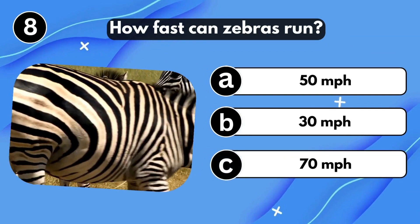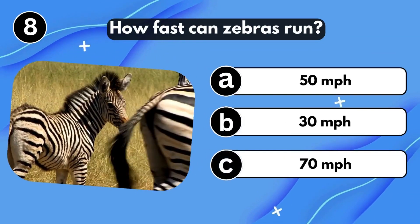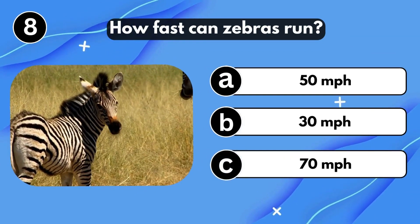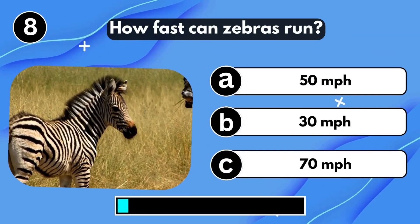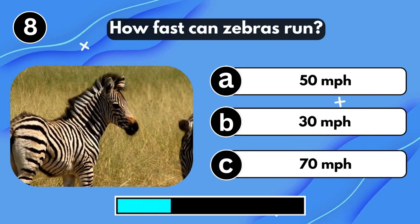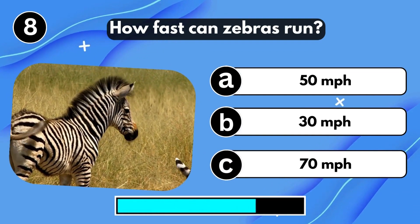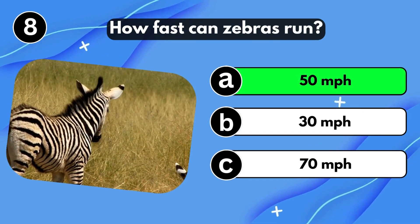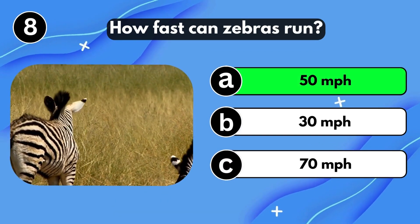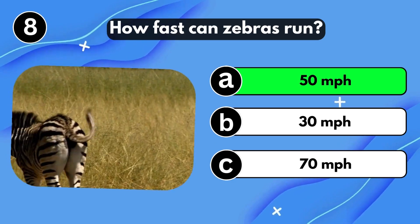How fast can Zebras run? 50 miles per hour.